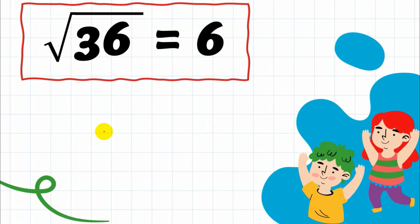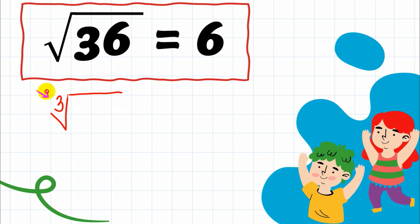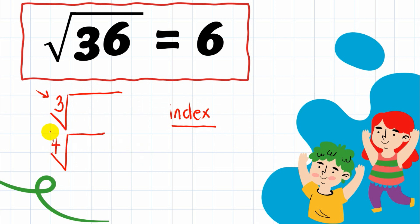In the square root of 36, sometimes you may encounter a radical expression that has a small number written just above and outside the radical sign — that is called the index. The index can be three, four, five, six, seven, and so on, depending on the given.